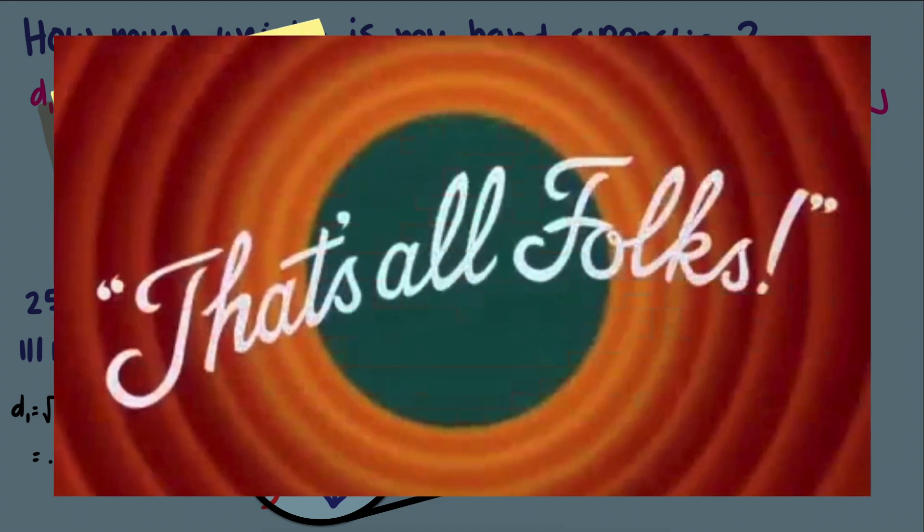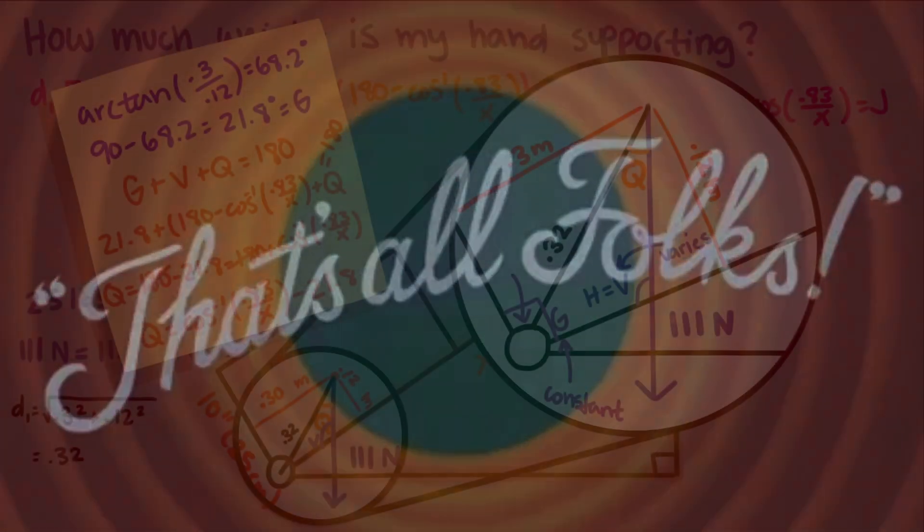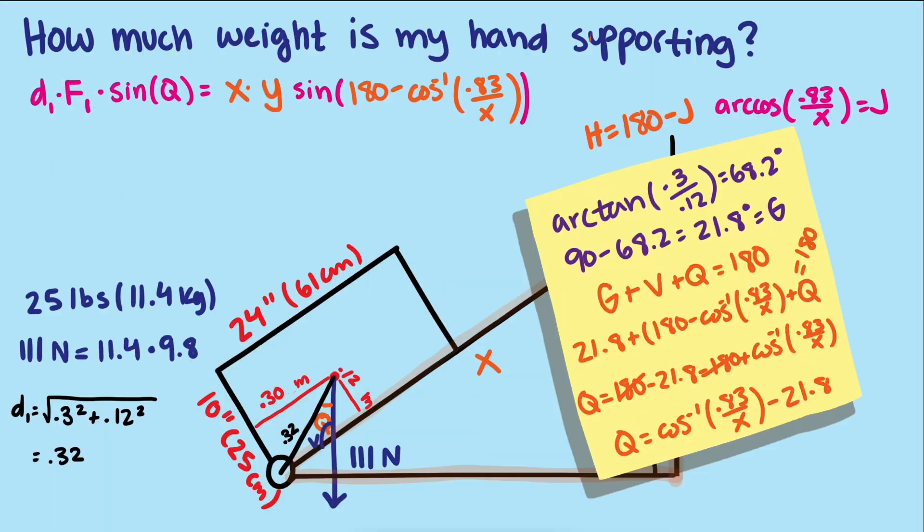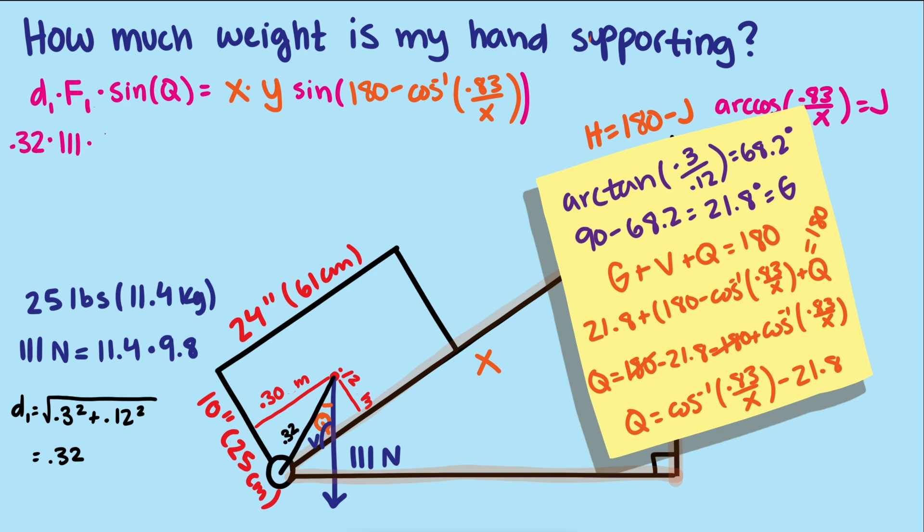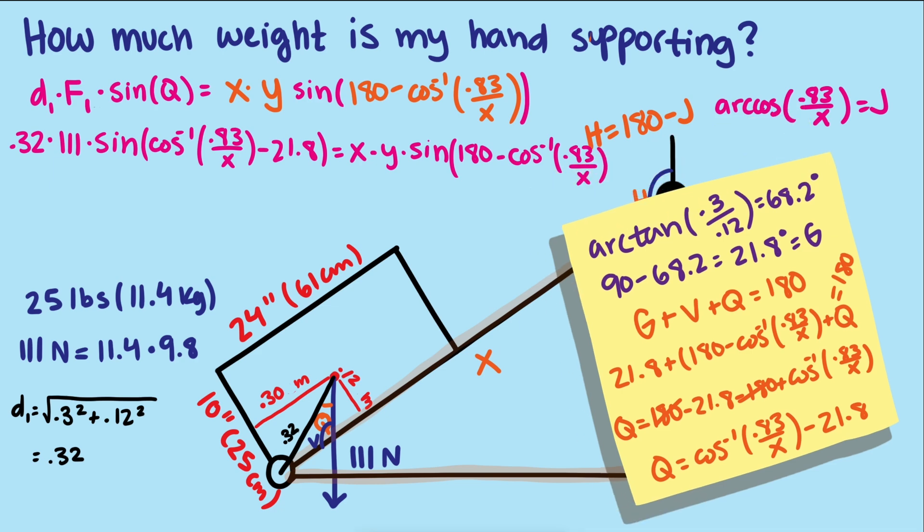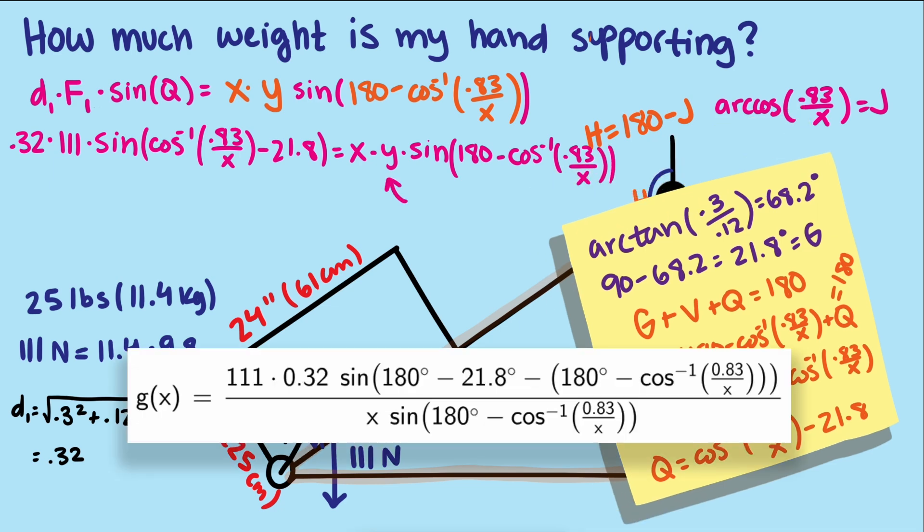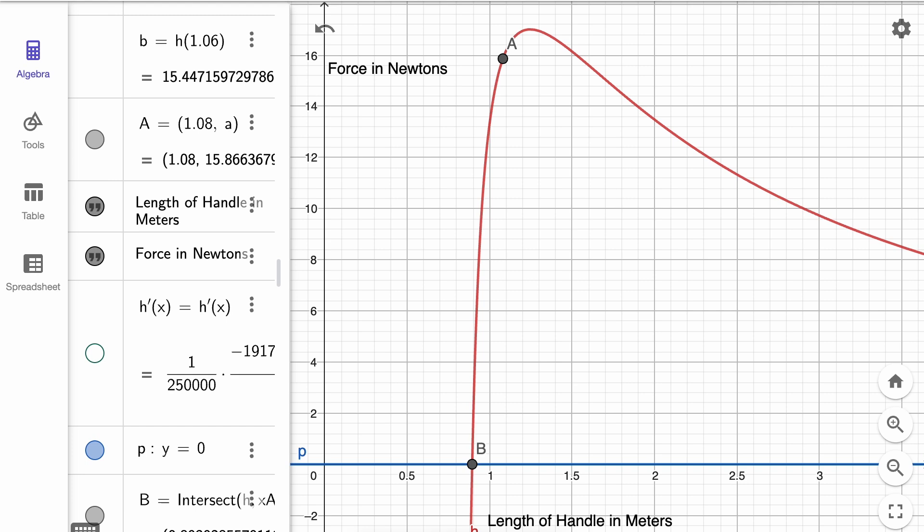We now know enough to create a formula to find how the length of the handle will affect the force we exert. Bringing it all together we have a force times a distance times the sine of an angle equals this force times this distance times the sine of this angle. And as we solve for y we finally have our equation. This shows what I call the roller board headache curve. The roller board I use the most has a handle that's about 108 centimeters in length when extended. I use the curve to find the force on my hand with our assumptions.